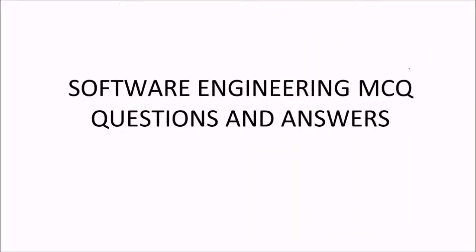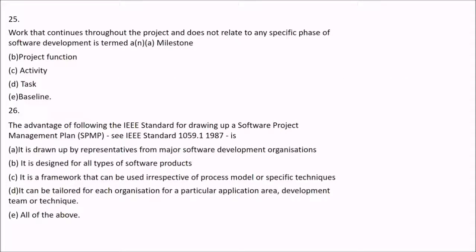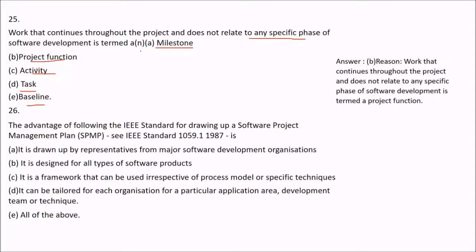Question 25: Work that continues throughout the project and does not relate to any specific phase of a software project is termed as what? Options include milestone, project function, activity, task, or baseline. The answer is B — project function. Work that continues throughout the project and does not relate to any specific phase of software development is termed as project function.